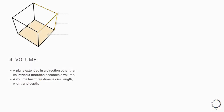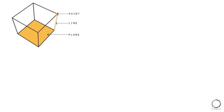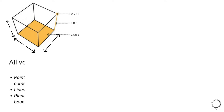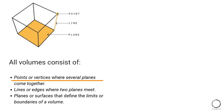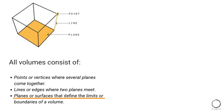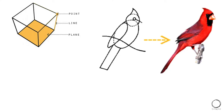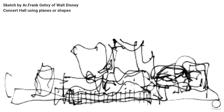Moving ahead to the conversion of plane to volume: a plane extended in a direction other than its intrinsic direction becomes a volume. A volume has three dimensions — length, width, and depth. A volume consists of points or vertices where several planes come together, lines or edges where two planes meet, and planes or surfaces that define the limits or boundaries of the volume.